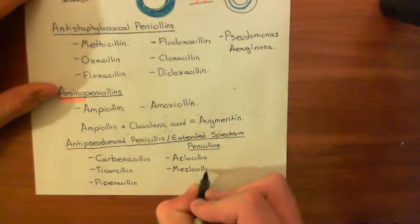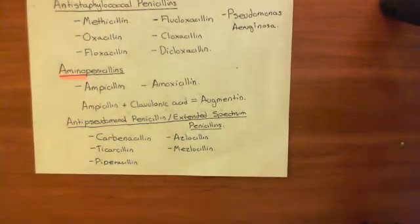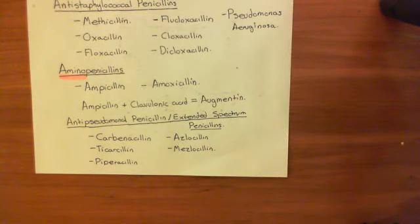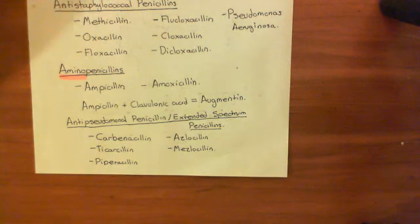To summarise: carbenicillin, ticarcillin, piperacillin, azlocillin, and mezlocillin are all examples of extended-spectrum penicillins or anti-pseudomonal penicillins. They are extremely good at getting through the porins in the outer cell membrane of gram-negative bacteria and also at resisting beta-lactamase enzymes, which are a mechanism of resistance to penicillin antibiotics.